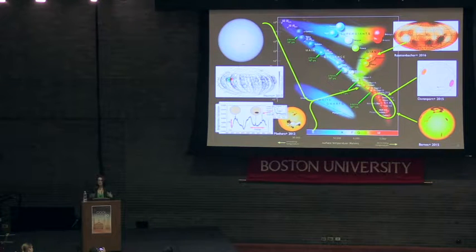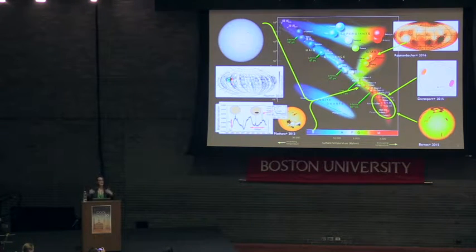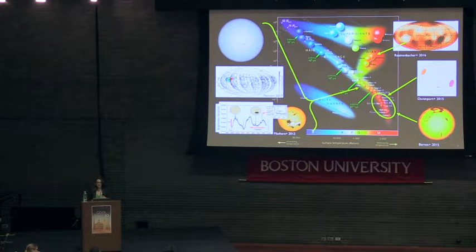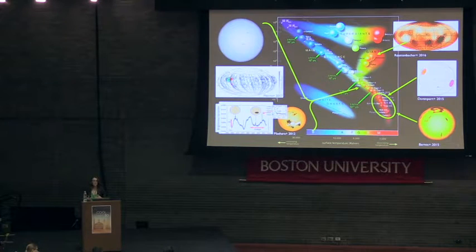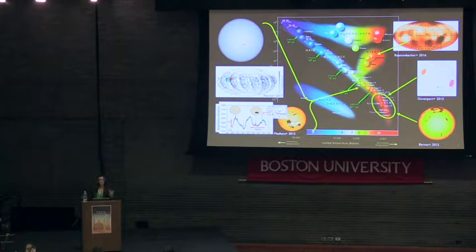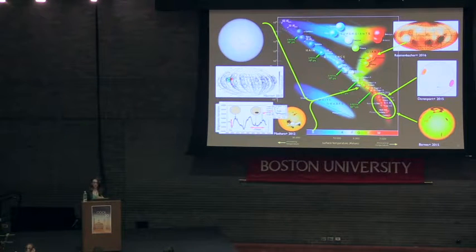The tachocline, once thought to be necessary to sustain stellar dynamos, is this thin shearing interface between the outer convection zone and the radiative interior in solar-like stars. In light of the current star spot landscape, now is a good time to ask not just how stars get their spots, but also what can the pattern of flux emergence on stellar surfaces tell us about the underlying dynamo mechanism?